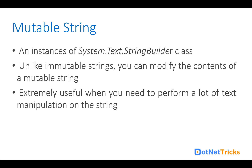Mutable strings are useful when you need to perform a lot of text manipulation. For example, if you are developing a template for sending emails and writing that code in C#, you should use a mutable string to create the email template with concatenation and text operations.